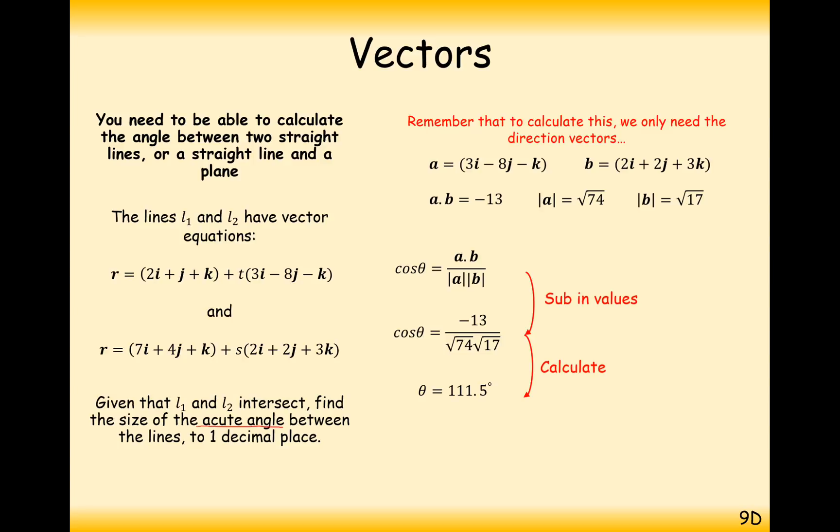The question here just wants us to do an extra little calculation, which is the acute angle between the two lines. At the moment, this is what we've got here. Our axis intersection point is here. We've got two lines that are going away from this intersection point, and the angle there is going to be 111.5.